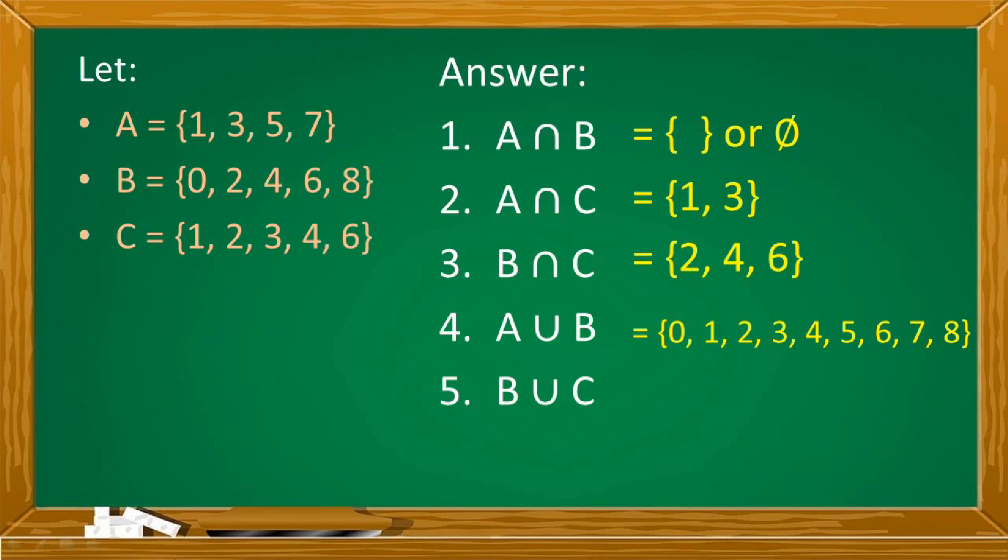And last number 5, B union C. Combining their elements without repetition, we have 0, 1, 2, 3, 4, 6, and 8. Pinagsama lang lahat ng elements ni set B at ni set C na walang nauulit.